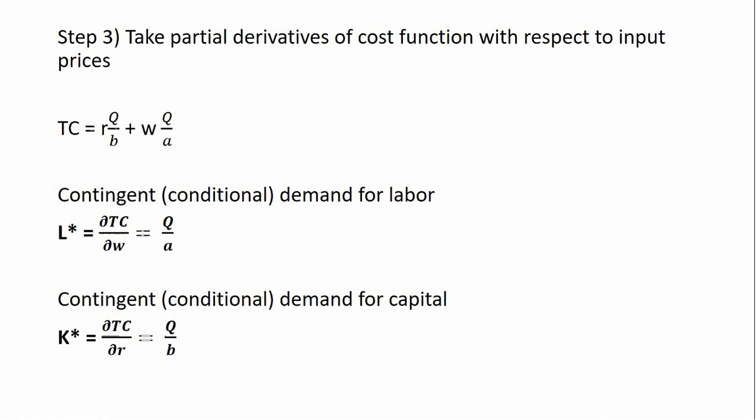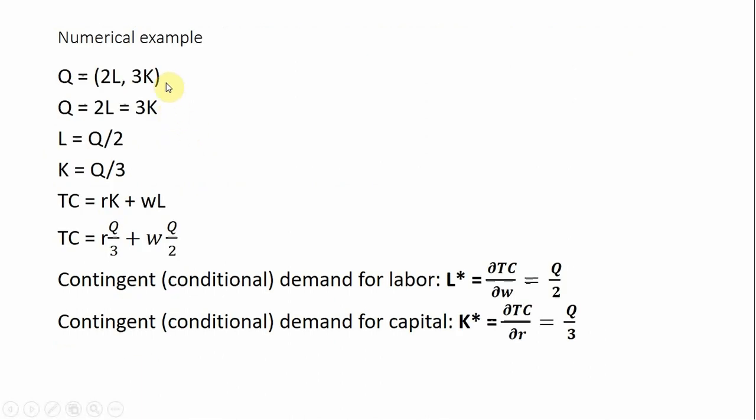Let's do a numerical example. Here, the fixed proportion production function looks like this. So that means Q will equal 2 times L, which will equal 3 times K. Solving for L and K respectively, we get that. Making those substitutions into our total cost equation.